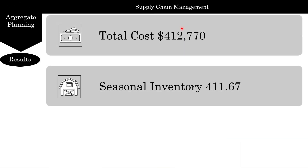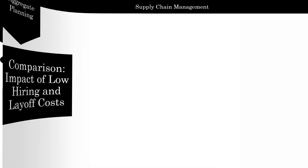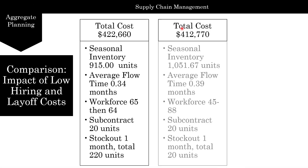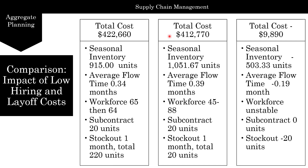Here are the results — new total costs. The comparison shows we ended up with less cost. We have our seasonal inventory went up, your average flow time went up, workforce was unstable and fluctuated between 45 to 88. There's no change in subcontracting, and stock out was much less in the second plan. So it was overall cheaper because you were able to save money from basically varying your workforce.